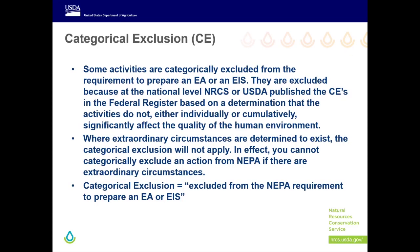At the national level, NRCS or USDA has identified some activities that have been determined to not, either individually or cumulatively, significantly affect the quality of the human environment. Because of this determination, these activities are categorically excluded from the requirement to prepare an EA or an EIS. Where extraordinary circumstances are determined to exist, the categorical exclusion will not apply — you cannot categorically exclude an action from NEPA if there are extraordinary circumstances. Anytime you see the words categorical exclusion, think: excluded from the NEPA requirement to prepare an EA or EIS.